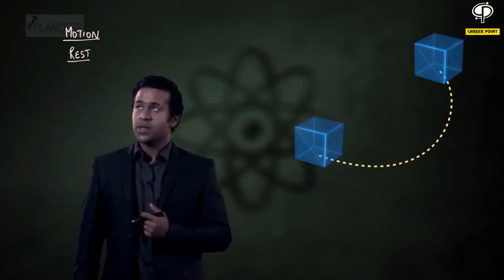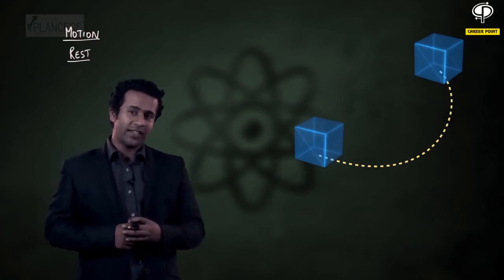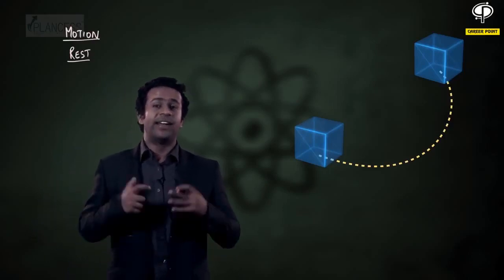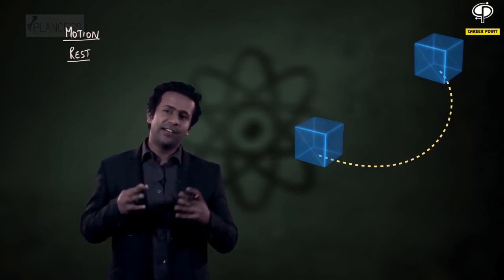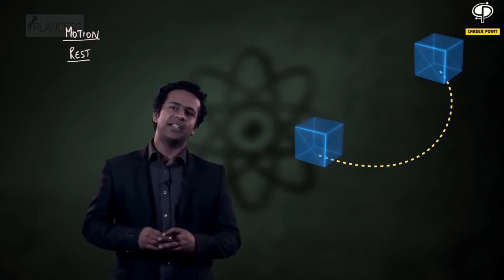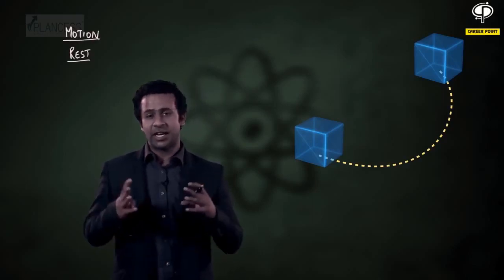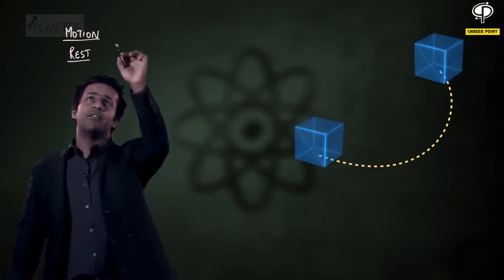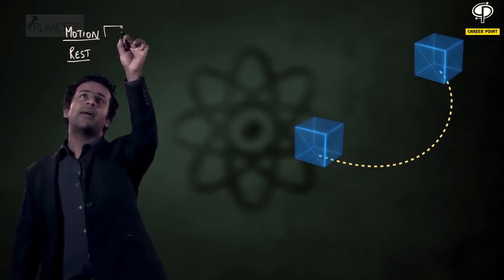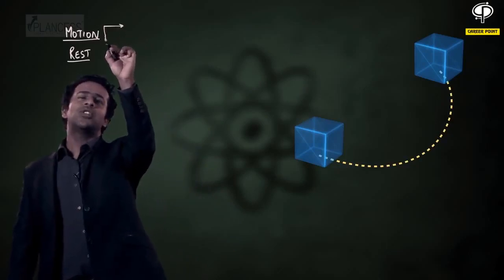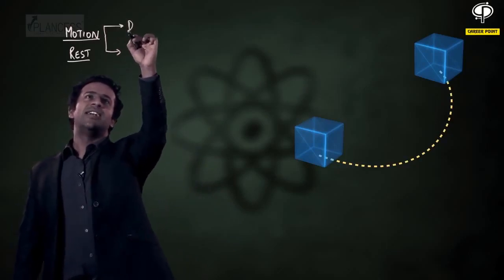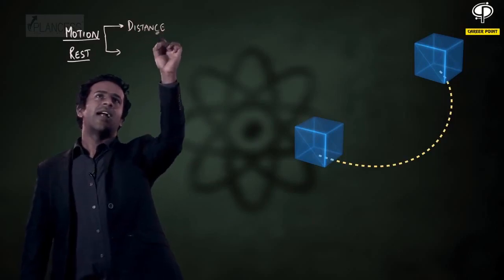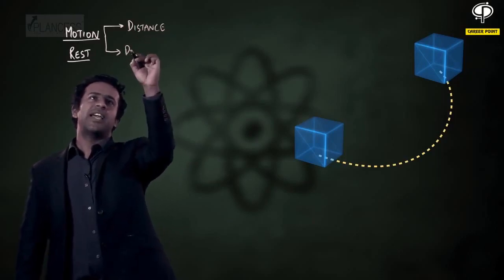There are various ways in which we describe motion. We define different parameters which are used for the description of motion. In this session, we will be talking about two such parameters which are distance and displacement.